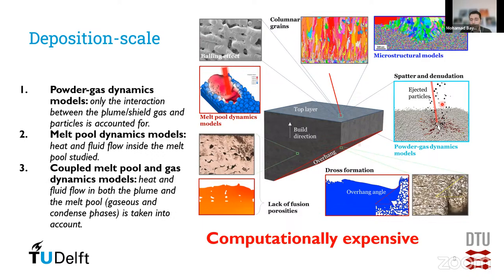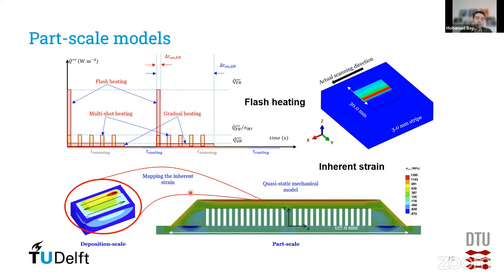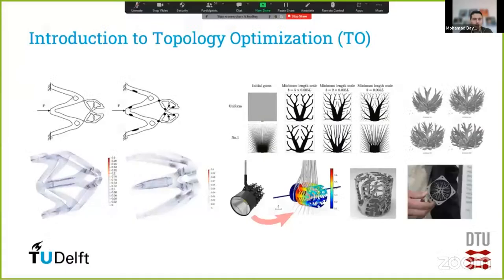The takeaway from deposition scale simulations is that they are confined to very small domains and are not applicable to an entire part. That is why we use part-scale simulations or shortcut methods such as flash heating, multi-shot methods, gradual heating, and inherent strain simulations, which enable us to predict residual stresses and deflections over an entire part — something impossible to do with deposition-scale models, at least as of 2024.